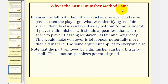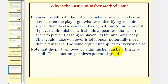Let's look at why the last diminisher method is fair. If player one is left with the initial claim because everyone else passes, they got what was identified as a fair share — no one else can take it away without diminishing it. If another player diminishes it, it should appear less than a fair share to player one, making whatever is left potentially more than a fair share. The part removed by a diminisher can be arbitrarily small, which penalizes potential greed. Even when the last player receives more than a fair share, it's still fair because everyone else valued that piece at less than or equal to a fair share.